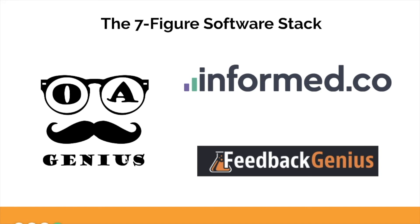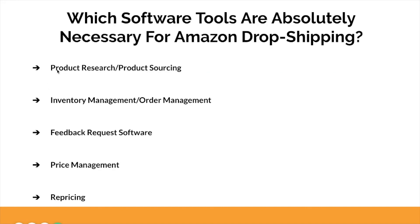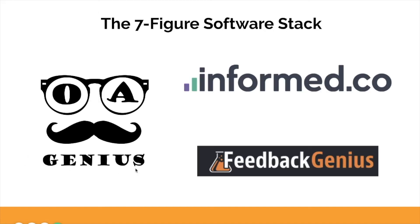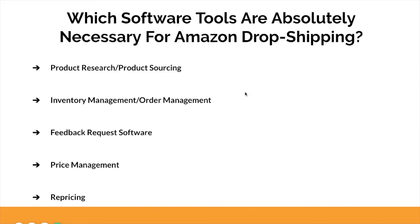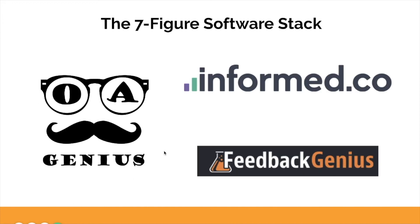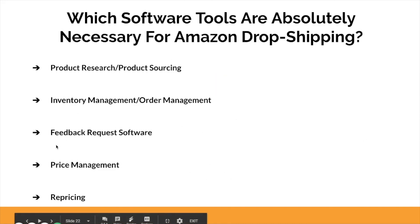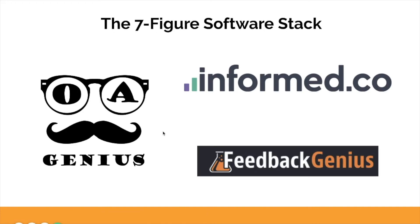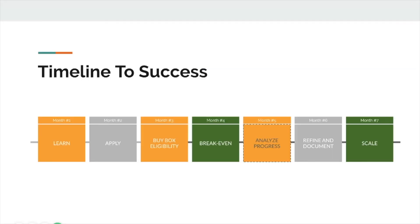Here's our seven-figure software stack. OA Genius will help you with product research, product sourcing, inventory management, order management, and price management. Inform.co will cover your repricing — it's the main repricing software you'll use, and there's a direct API with OA Genius which we'll talk about in later videos. Feedback Genius will be your feedback request software so you can start getting more feedback for your seller account.